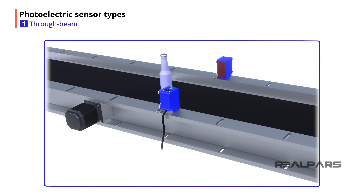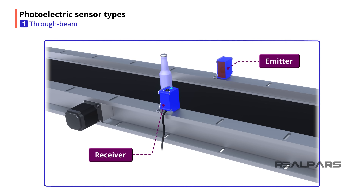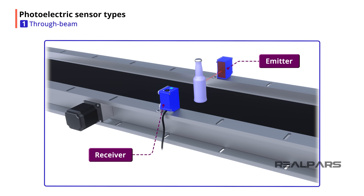First, I will talk about the through-beam photoelectric sensor type. Through-beam sensors have the emitter and the receiver in their own separate component. For the through-beam sensor to work, the emitter and receiver have to be pointed at each other and be aligned. When they are aligned and nothing is blocking the light, the output of the sensor will be on. If you put something between the emitter and receiver to block the light, the output of the sensor will turn off.